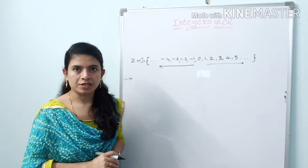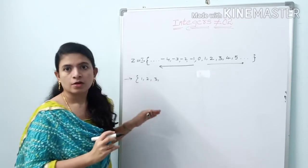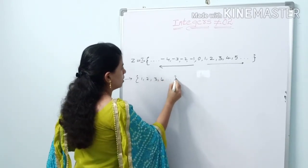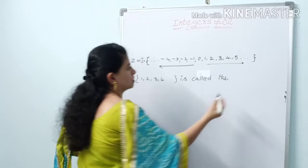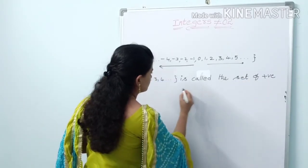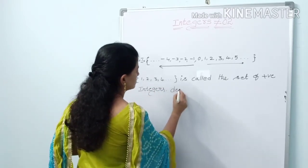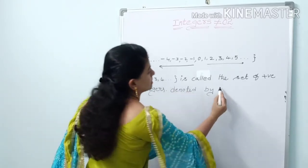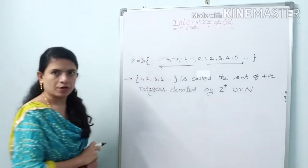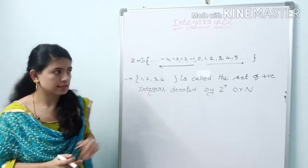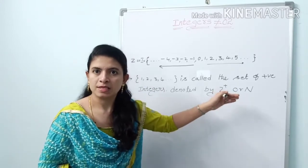As stated in the above definition, the set {1, 2, 3, 4, ...} is called the set of positive integers, denoted by Z plus, or the natural number set, capital N.